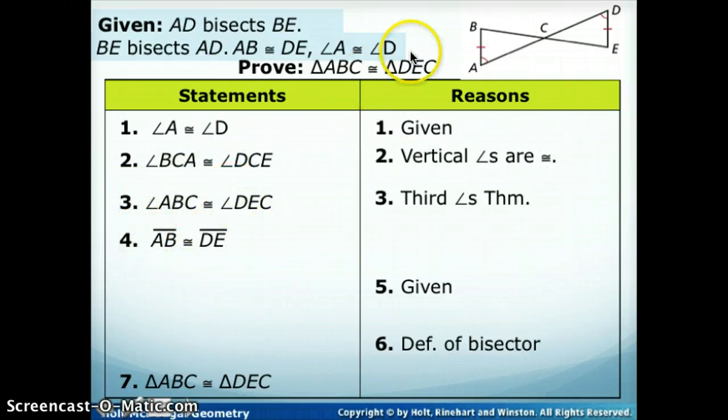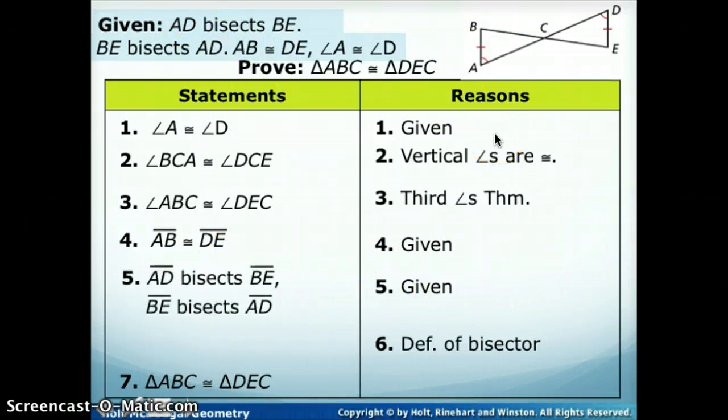Now, how do we know that AB is congruent to DE? If you can't figure out a reason why, always go back and check, and this one is in the given. So AB is congruent to DE because it's given to us. Now we have one more given, and there's one piece we haven't used, that AD bisects BE and BE bisects AD.